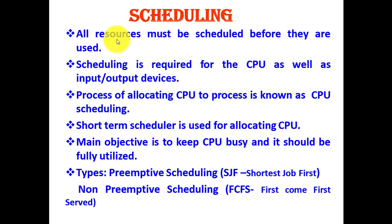As mentioned on this slide, there are two types of scheduling: preemptive and non-preemptive scheduling. We will be learning all about this in the coming tutorials. For example, preemptive scheduling includes Shortest Job First, and an example of non-preemptive scheduling is First Come First Out.